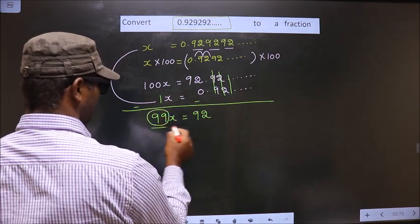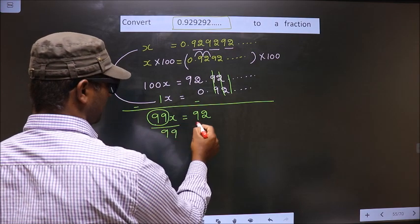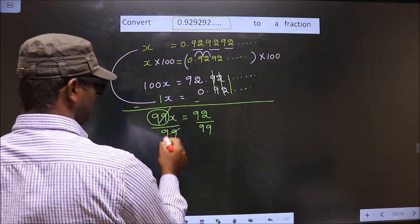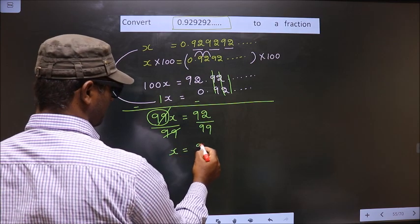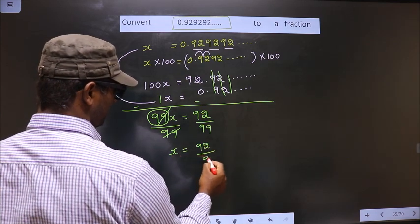You should remove 99. For that, you divide by 99. So now it cancels out. You get x equals 92 by 99.